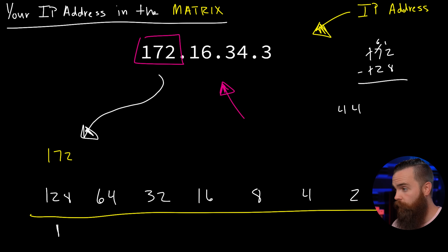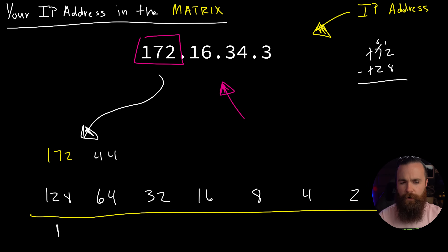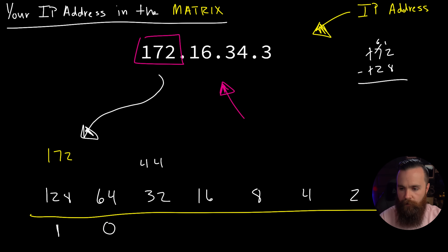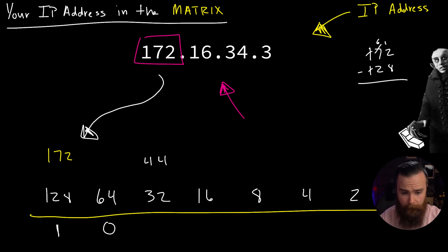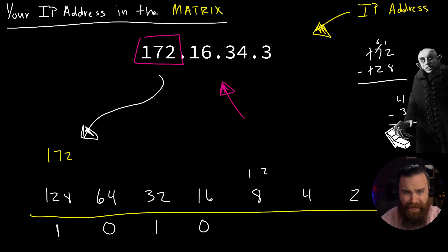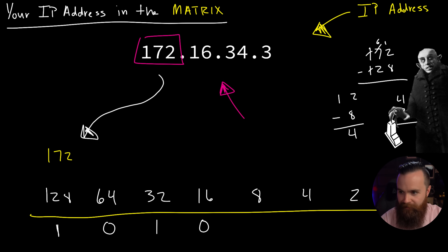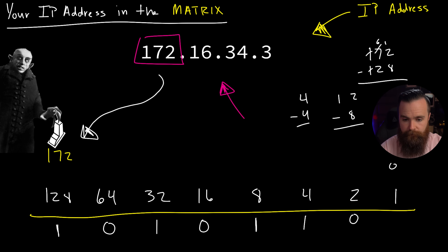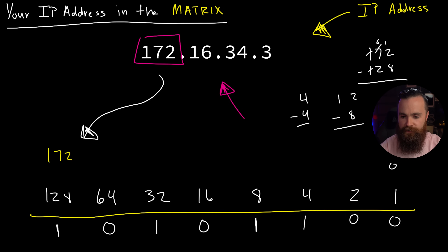We have 44 left over. Can we take 64 away from 44? No - so 64 is off, zero. Can we take 32 away from 44? Yes! 44 minus 32 leaves us 12, so 32 is on. Can we take 16 away from 12? No - 16 is off. Can we take 8 away from 12? Yes - 8 is on, and 12 minus 8 leaves us 4. Can 4 have 4 taken away from it? Yes - 4 is on. 4 minus 4 is 0. So the last two bits - 2 and 1 - are off. Result: 1, 0, 1, 0, 1, 1, 0, 0. We just converted 172 to binary.